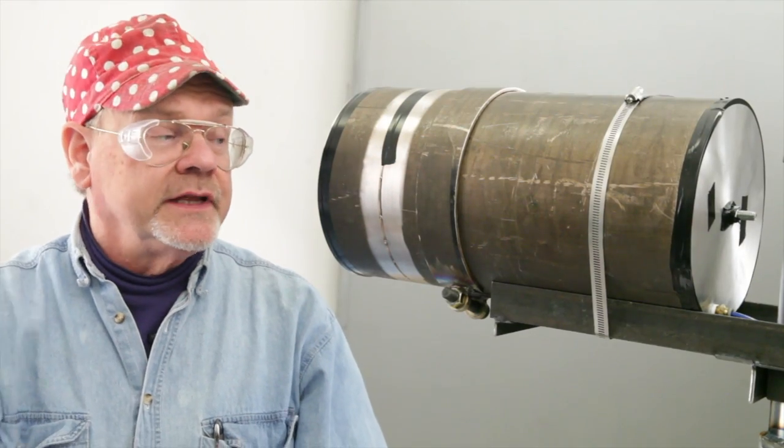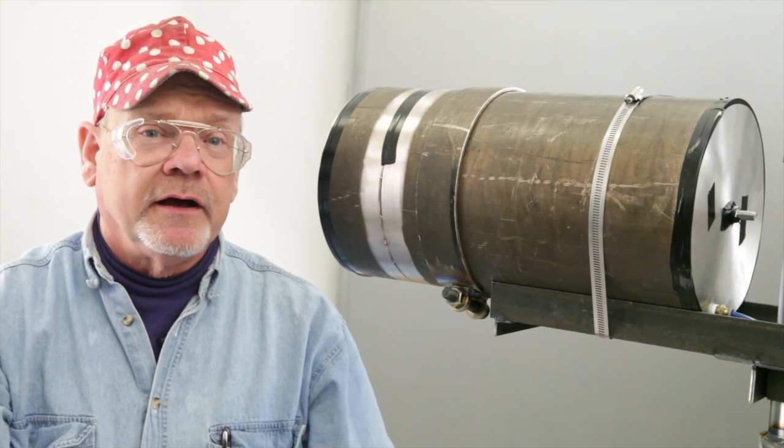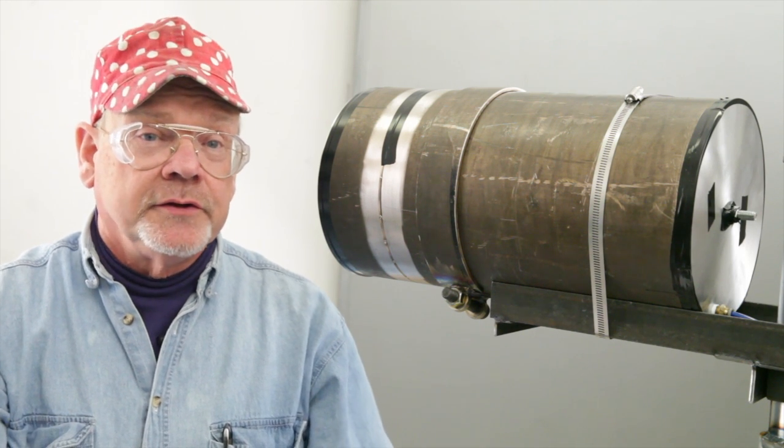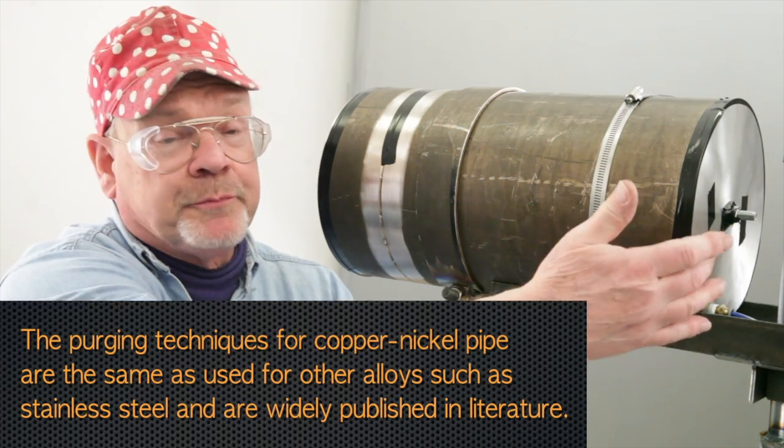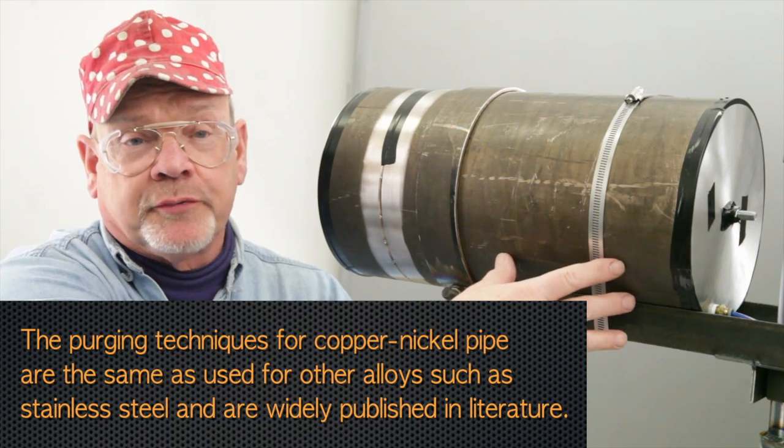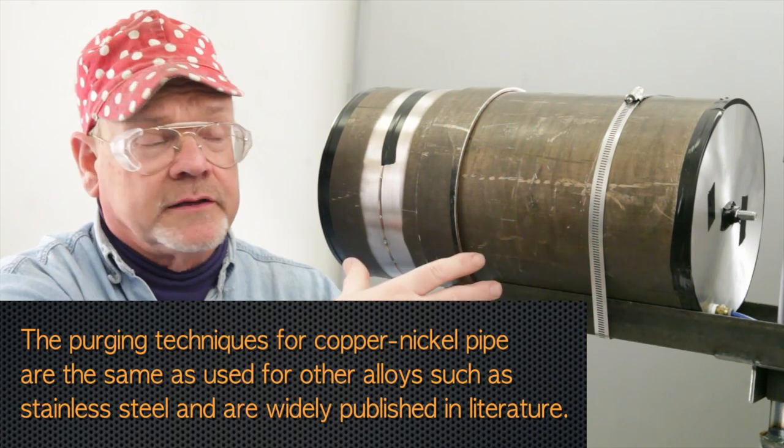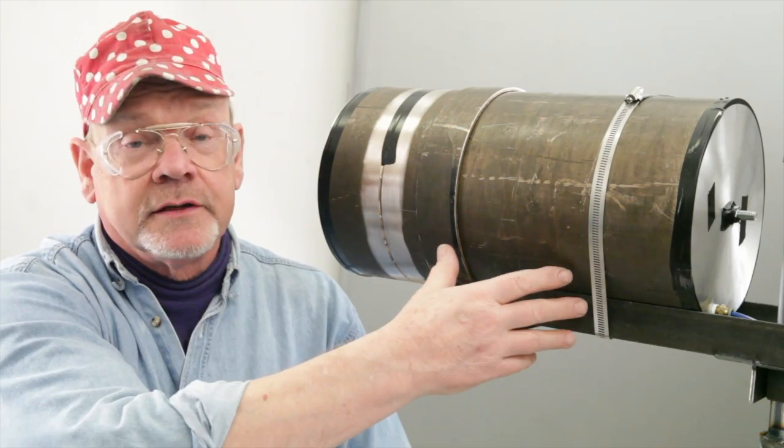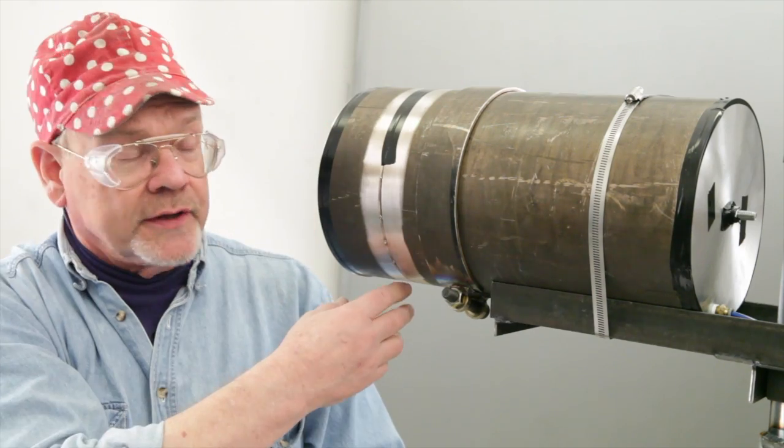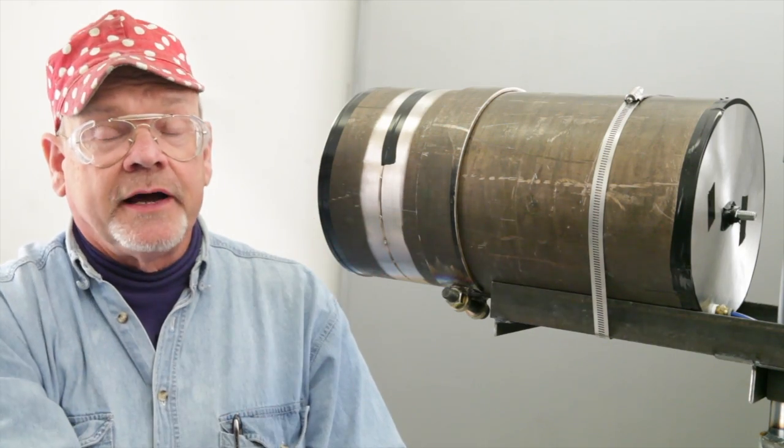For many pipe joints, the inside of the pipe must be purged with argon to remove any oxygen that might cause oxidation on the inside. We'll use 100% argon. We will set up a purge dam with argon flowing in. We'll let that purge run long enough to remove any air that's inside the pipe that could cause oxidation. We'll also tape up any place where the gas might escape so that the area that we weld will have a good purge behind it.